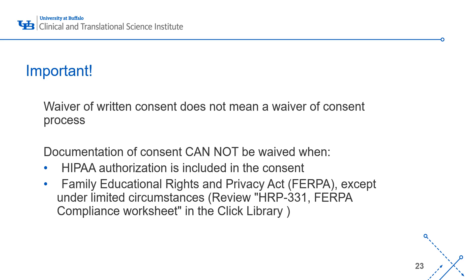Some cases when documentation of consent cannot be waived include when a signature is required outside of the research context for this activity. A good example is HIPAA authorization, which always requires a signature — so if medical records are accessed or study data enters a medical record, the consent form must include a HIPAA authorization and a signature must be obtained. Another example is the Family Educational Rights and Privacy Act (FERPA), except under limited circumstances, which can be reviewed in the HRP 331 FERPA Work Compliance Worksheet available in the Qlik Library.